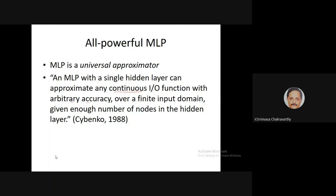For this reason, an MLP is called a universal approximator — it can approximate pretty much anything. With a single hidden layer it can approximate any continuous input-output function with arbitrary accuracy over a finite input domain, given enough nodes in the hidden layer. The term 'node' is sometimes used, sometimes 'neuron'.